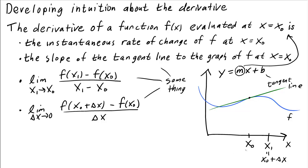Of course the derivative depends on the point x0. If we evaluate the derivative at a different point, we would get a very different tangent line with a very different slope, and hence the derivative depends on the point at which we evaluate it. So our notation for the derivative should take into account this dependence on the point.